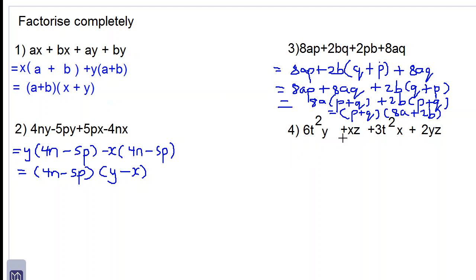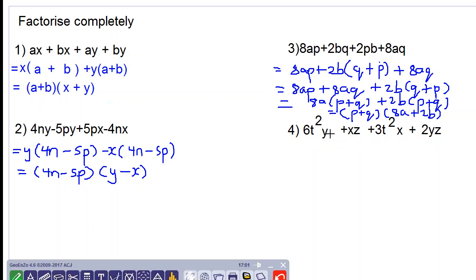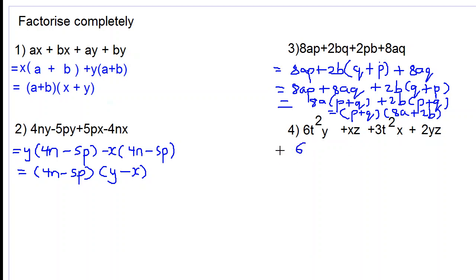Let's factor number 4 now. If we look at the first two terms, we do not have any common factors. The letters are all different. Look at the first and third term, and we see we have some common letters, and also the common factor of 3. So let's rewrite this expression, putting the like terms next to each other.